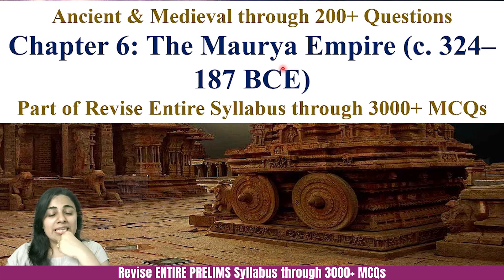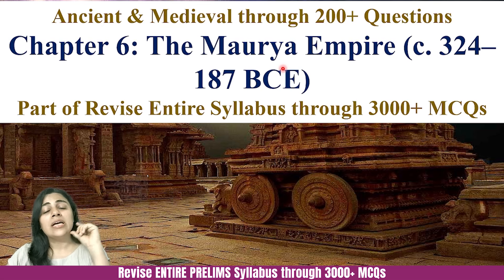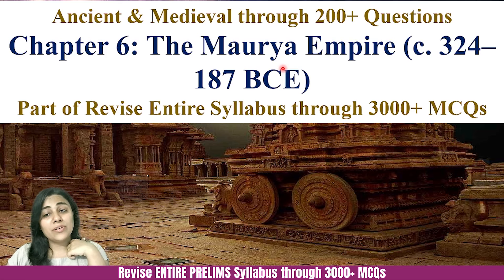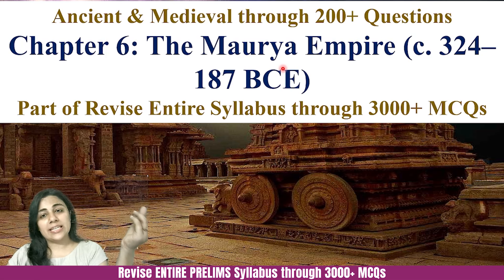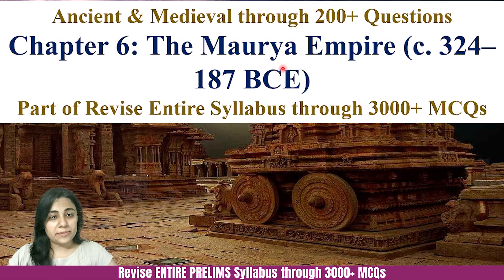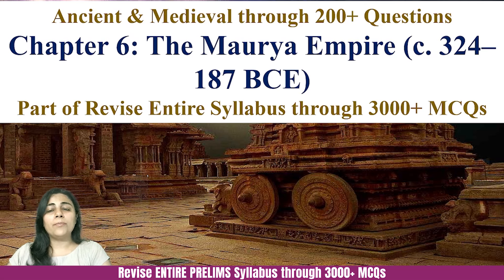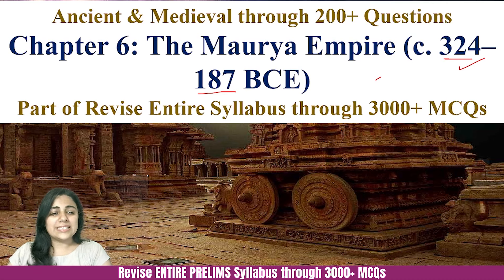Chandragupta Maurya took Jainism to South India, and we see his impact in the works of Kautilya in the form of the Arthashastra. An empire has an impact that transgresses its own time period and is on a much larger scale with much more powerful rulers. The Mauryan Empire was the first empire of India, distinct from all the dynasties we have read till now. The time period of the Mauryas is 324 to 187 BCE — and since we are in the BCE period, we count backwards. 324 is the year when Chandragupta Maurya formed the Mauryan Empire.